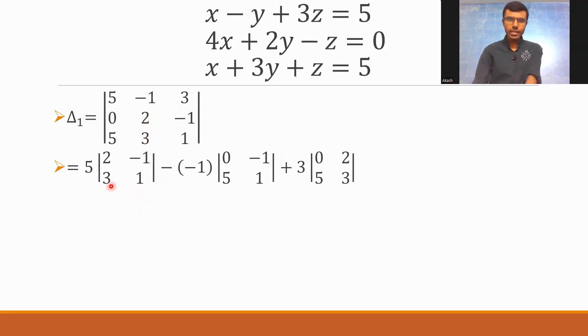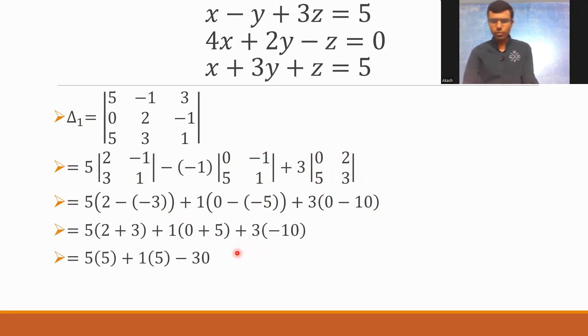Now, next. Now, again, basic expansion. 5 into 2, 1 is 2, minus of minus 3. Plus 1 into 0, 1 is 0, minus of minus 5. 3 into 0 minus 10. Then, if you keep simplifying, this is what you would get. Ultimately, my delta 1 is 0. It's totally okay if delta 1 is 0. Don't bother about it. It's totally okay. There's nothing a rule that delta 1 should not be. Delta 1, delta 2, delta 3 can be 0, but delta should not be 0. Fine.